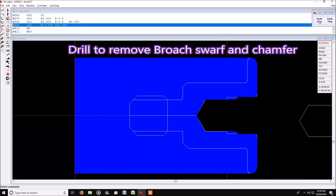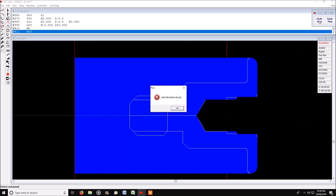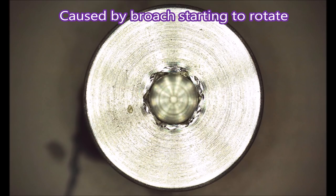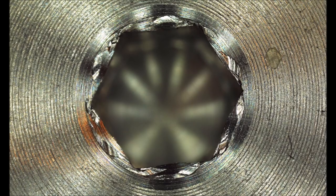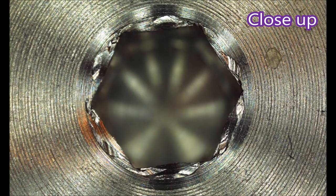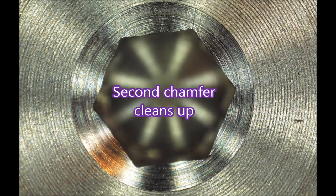Then we clean up and hit another chamfer at the end of the broaching, because this is the mess you get when the broach goes in. It has to be started by the part because it's not powered—it's actually the part that causes the broach to rotate. That's the sort of effect you get. Then you do a second chamfer and that cleans it up. That chamfer is possibly a bit big.